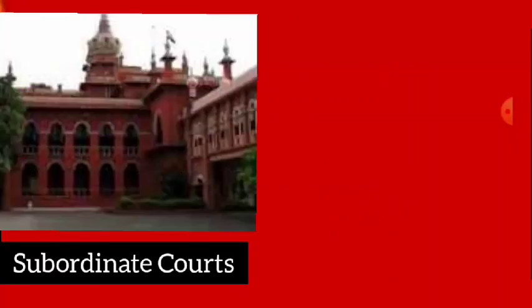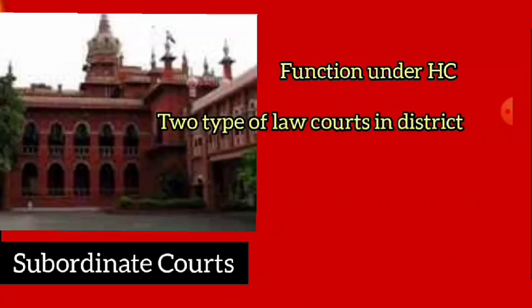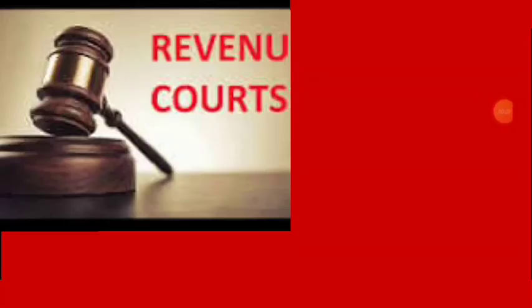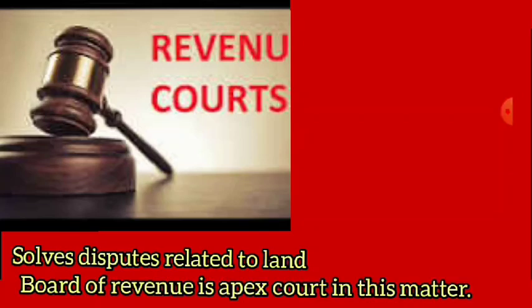There are also subordinate courts in the country. Besides the High Court, there exist a number of other judicial courts functioning under the complete control of the High Court. There are two types of law courts in every district: civil courts and criminal courts. The District Court is the highest civil court in the district. Besides, revenue courts solve disputes related to land, and the Board of Revenue is the apex of all revenue courts. Every revenue dispute first comes to the court of the Tehsildar.